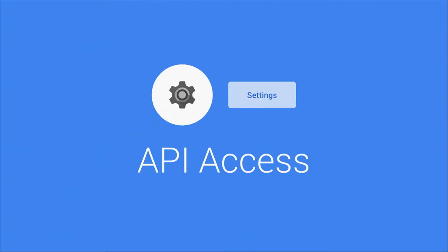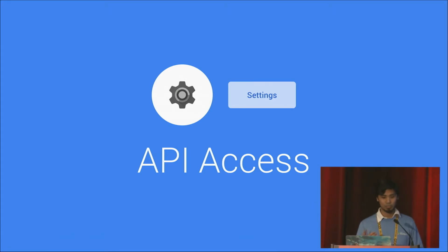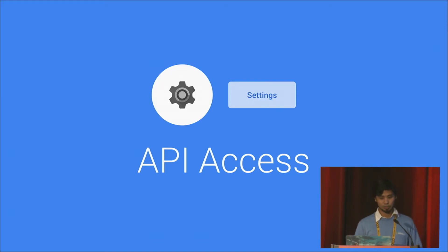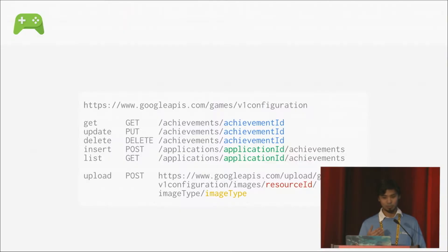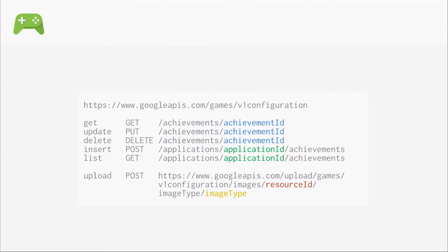To begin using these APIs, the first thing you need to do is go to the Developer Console, click on Settings, and then go to API Access. From there, you can follow the steps to set up the API. Once you do that, you should be able to get access to all these APIs.